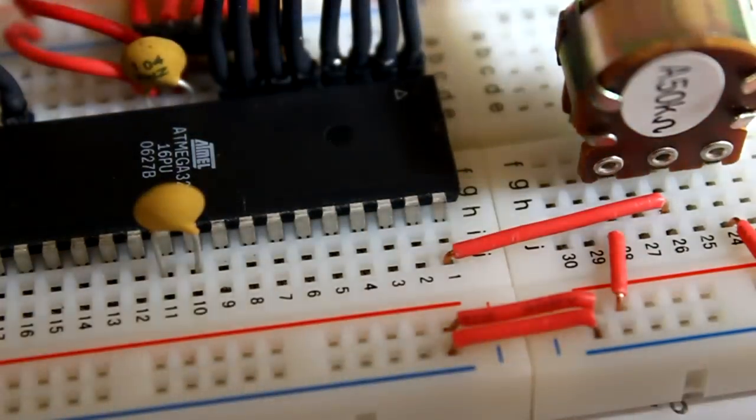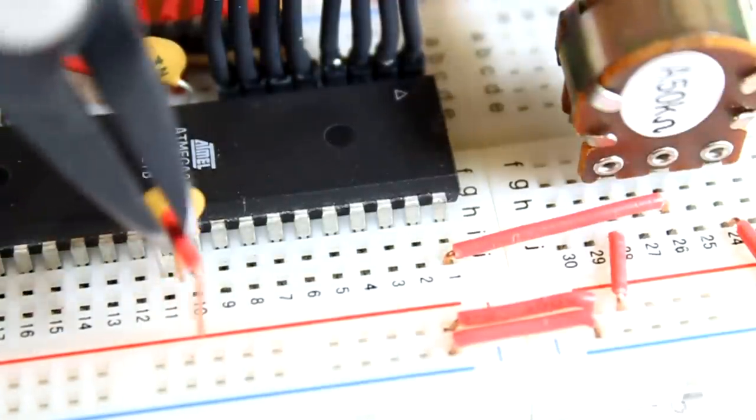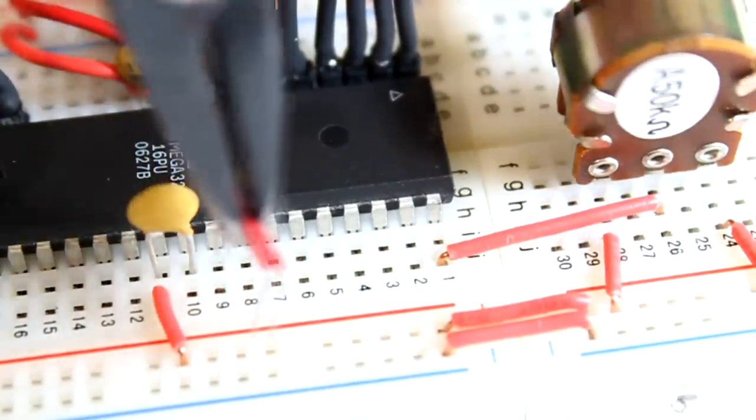Let's take pin number 30 and we're going to connect that to our power rail. And we'll take pin number 31, which is our ground, and we'll take that to ground.